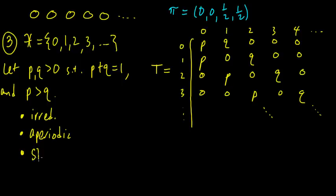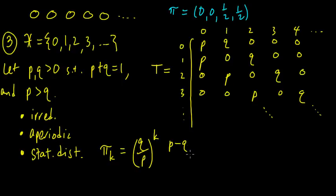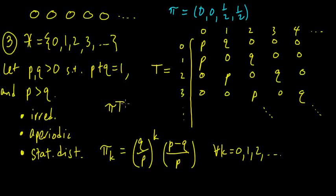It also has a stationary distribution. The stationary distribution is: pi(k) = (q/p)^k * (p - q)/p, for all k = 0, 1, 2, and so on. You just write down the set of equations to solve. It takes a bit of work — you have to use infinite series, set up a recursion, and solve for the infinite series — but it's not extraordinarily difficult. This is an interesting example because it has an infinite set of states and yet it has a stationary distribution.